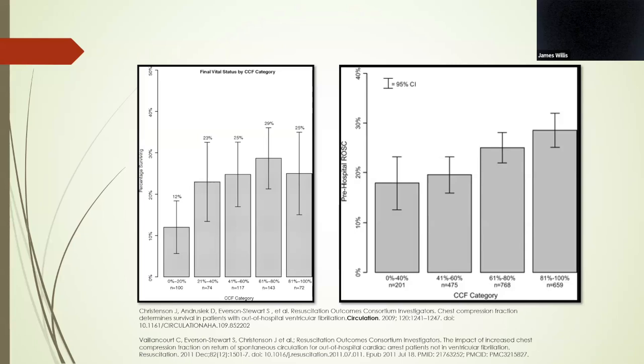Further reviews of the Resuscitation Outcomes Consortium registry found a link between CCF and survival in patients with V-fib/V-tach arrests on the left and pre-hospital loss in patients with non-V-fib/V-tach arrests on the right. For the patients in whom the chest compression fraction was measured, both of these groups were out-of-hospital arrests.